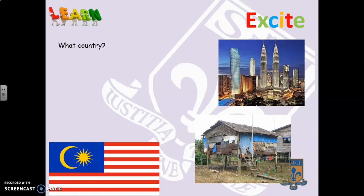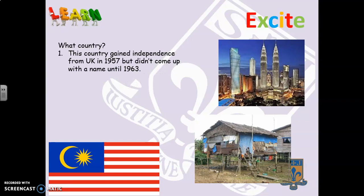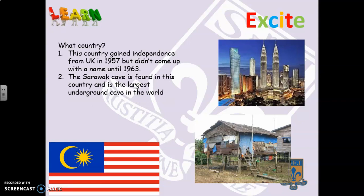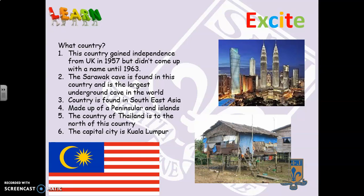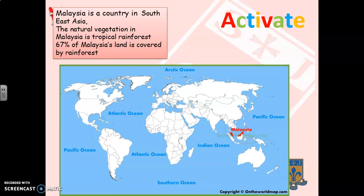Which tropical rainforest are we going to be talking about? The country gained independence from the United Kingdom in 1957 but didn't come up with a name until 1963. It has a large cave called the Sarawak Cave, the largest underground cave in the world. It's in Southeast Asia, made up of a peninsula and islands, with Thailand to the north. Its capital city is Kuala Lumpur — and the answer is Malaysia.